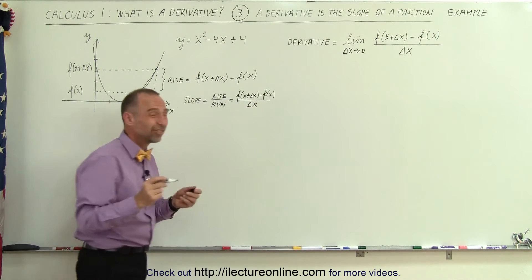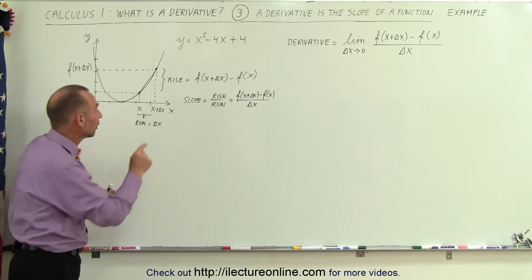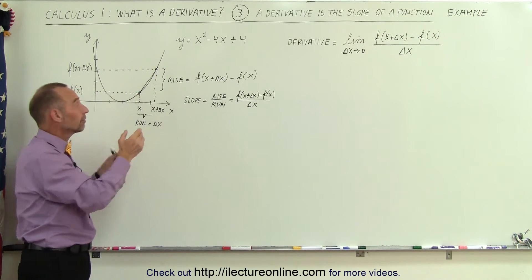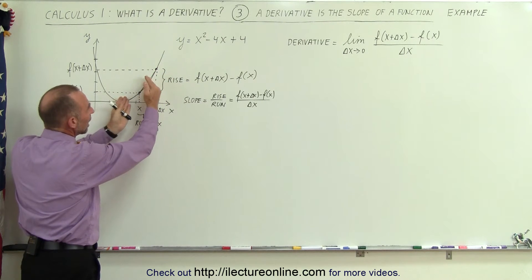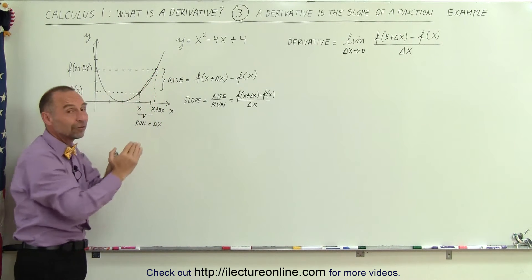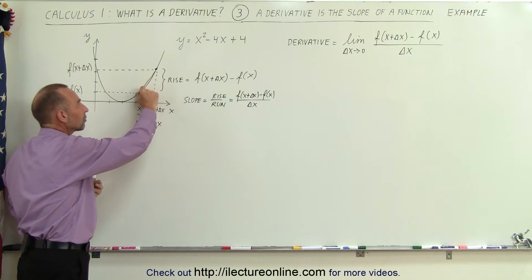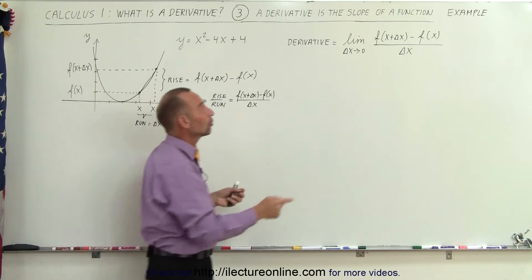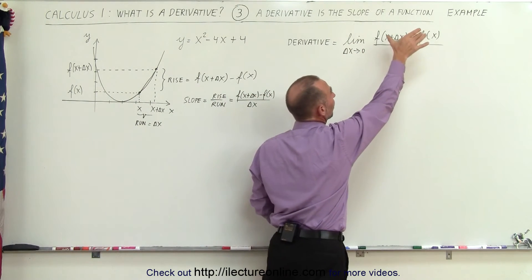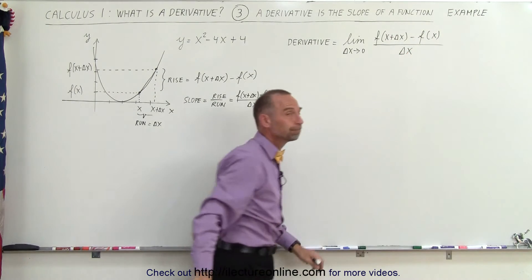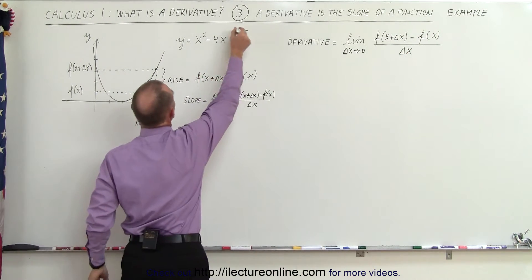That's the slope between these two points, but to find the slope at any point along the function, we need to take the two points and bring them infinitely close together. We allow delta x to go to zero, so the slope, or the derivative, is defined by taking the limit as delta x goes to zero of that ratio representing the rise divided by the run.